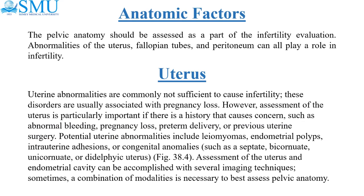Anatomic factors. The pelvic anatomy should be assessed as part of the infertility evaluation. Abnormalities of the uterus, fallopian tubes, and peritoneum can all play a role in infertility. Uterine abnormalities are commonly not sufficient alone to cause infertility; these disorders are usually associated with pregnancy loss.